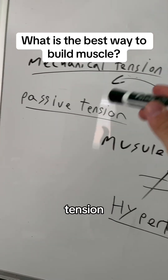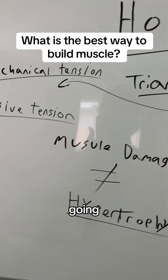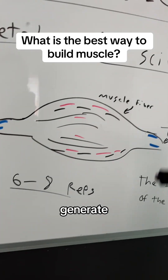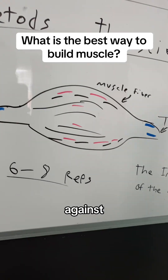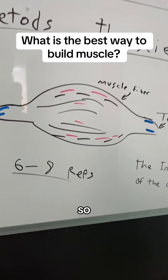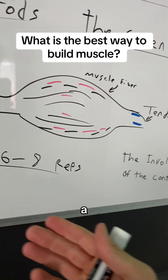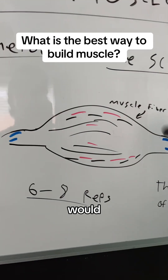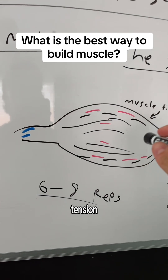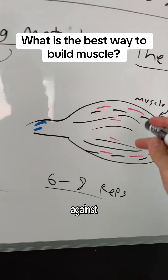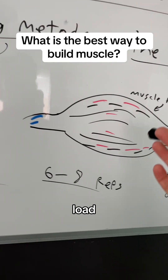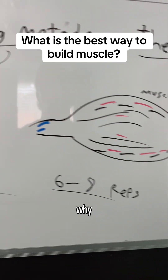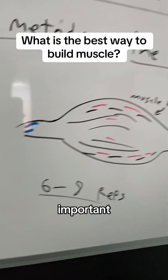Mechanical tension is simply the force that your muscles generate against a load. So if I were to pick up a dumbbell and contract my bicep, I would be generating mechanical tension against that load, contracting my muscle fibers.